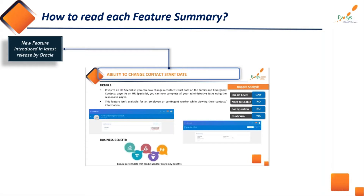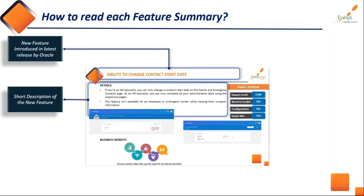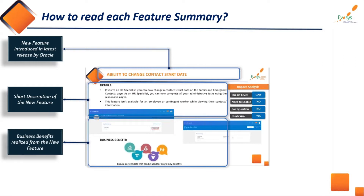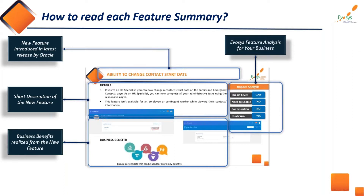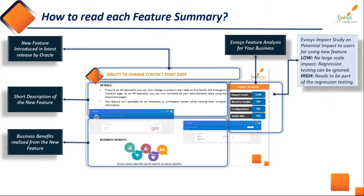Before I hand over to Priya, I wanted to spend a couple of minutes walking through the structure of the new feature slides we'll be using. At the very top, the highlighted area shows the short name of the feature, followed by a short description to inform you. Underneath that, we include a business benefit section so you can see the impact it may have on your organization. On the right, we include a high-level impact analysis covering four main areas, with the impact level providing a gauge of how it could affect your organization and the subsequent effort required for UAT.